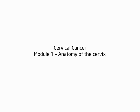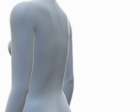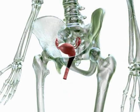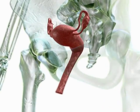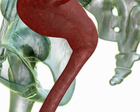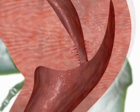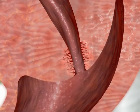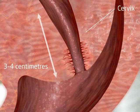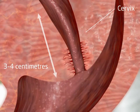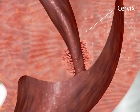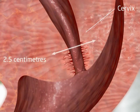Module 1: Anatomy of the Cervix. The cervix forms the lower portion of the uterus and projects into the upper vagina. It is cylindrical in shape, approximately 3 to 4 cm long and 2.5 cm in diameter.